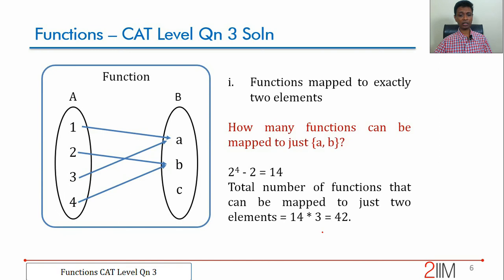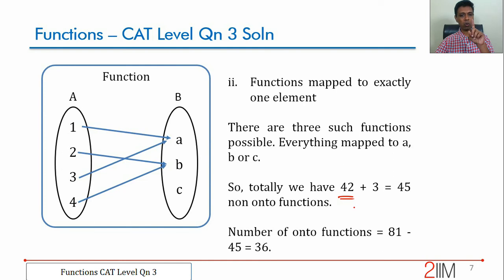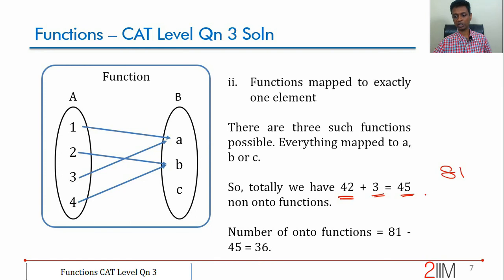Now, how many functions are mapped to only one element? Everything to a, everything to b, everything to c — that is 3 such functions. So total non-onto functions = 42 (mapped to 2 elements) + 3 (mapped to 1 element) = 45. We started with 81 functions, so 81 - 45 = 36.